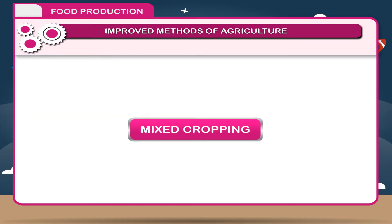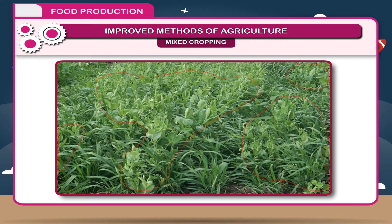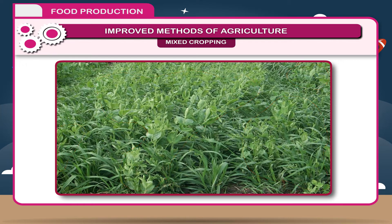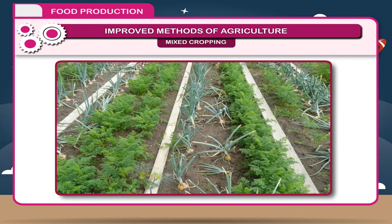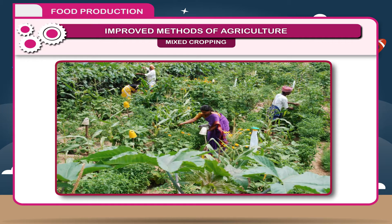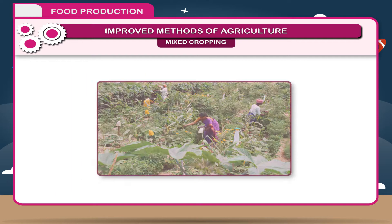Mixed cropping. When two or more crops are grown together in the same field, it is called mixed cropping. This method is important in the sense that sometimes one crop fails due to disease, flood or drought, then the other crop can be obtained and there is no overall loss in the yield.